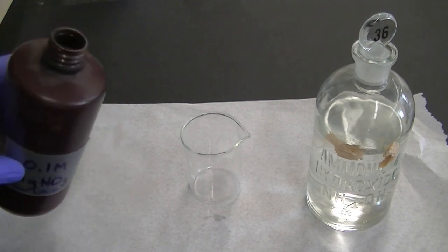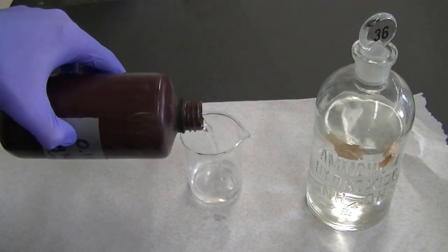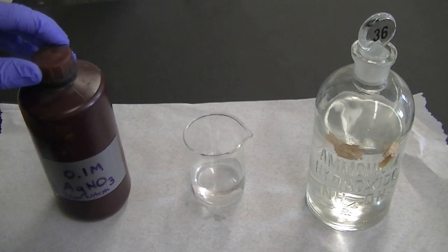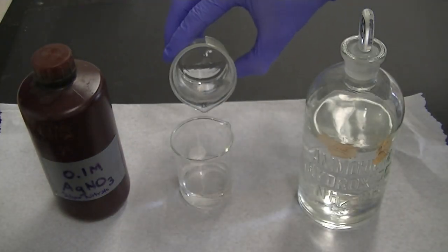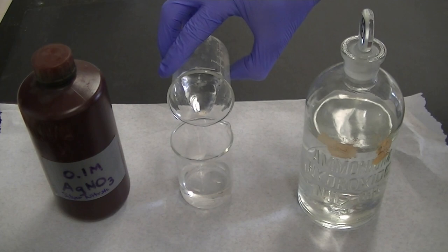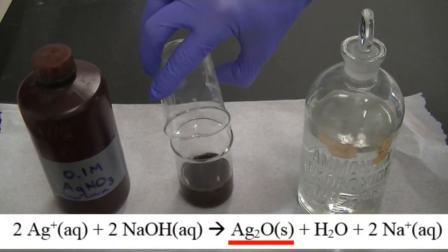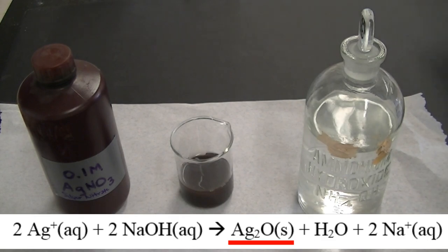To set up the experiment, I took a solution that contained dissolved silver ions. The reaction works better in a base, so I added a solution of sodium hydroxide to the dissolved silver. Notice that this formed solid silver oxide, which is black-brown in color.